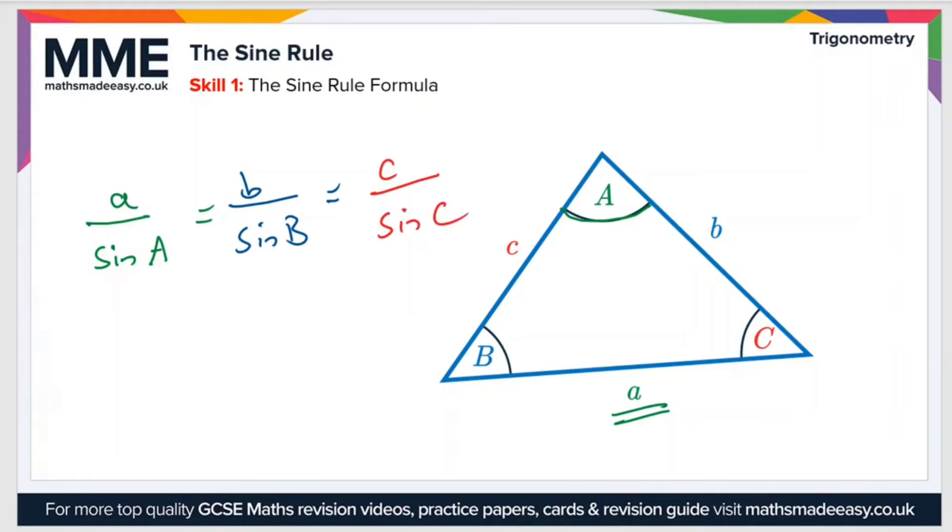Now, if we want, we can also write this the other way up. We can just completely invert all of the expressions. So sine A over A is equal to sine B over B, which is equal to sine C over C.